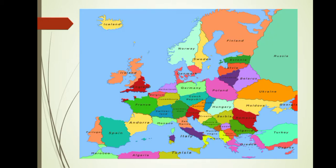Europe is the sixth continent in terms of area and the second smallest continent in the world. It has 44 countries. Russia is the largest country in Europe as well as in the world. Most of Europe lies towards the northern and eastern hemisphere.